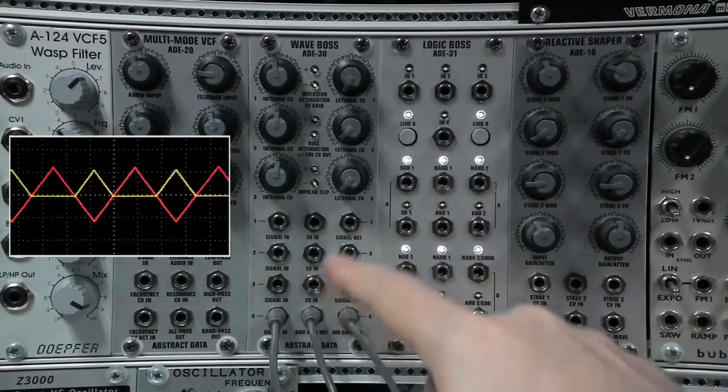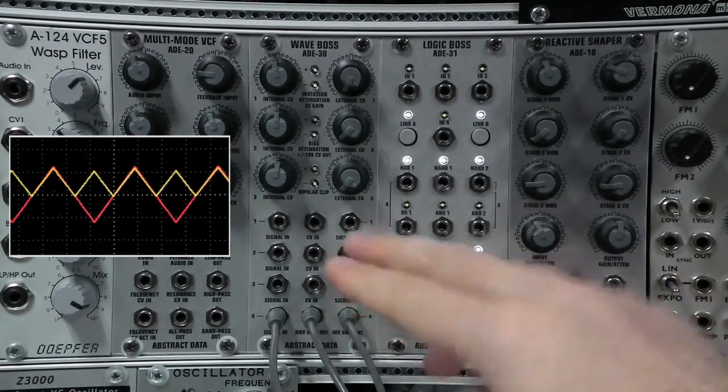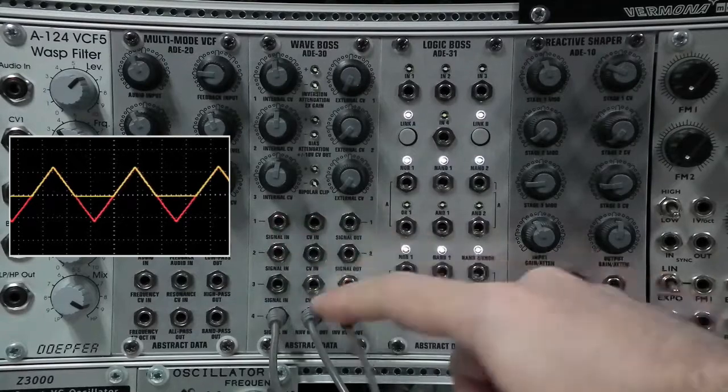That gives you two positive outputs. Now on the scope here I've got them both summed together and that gives me full wave rectification using both outputs of stage four.